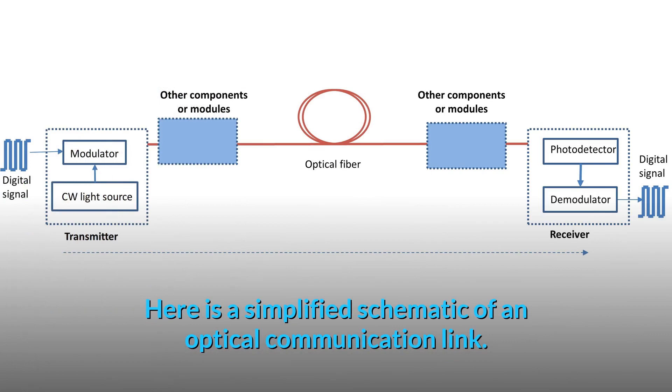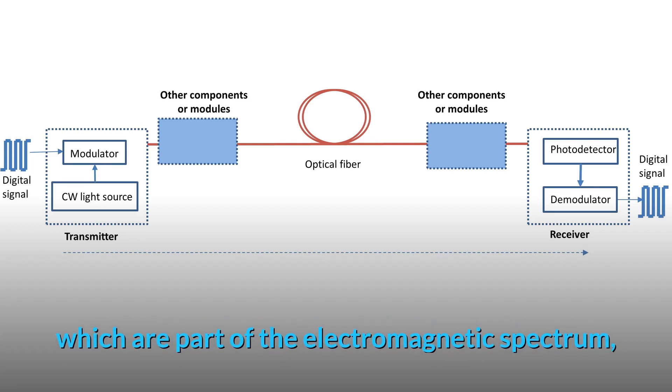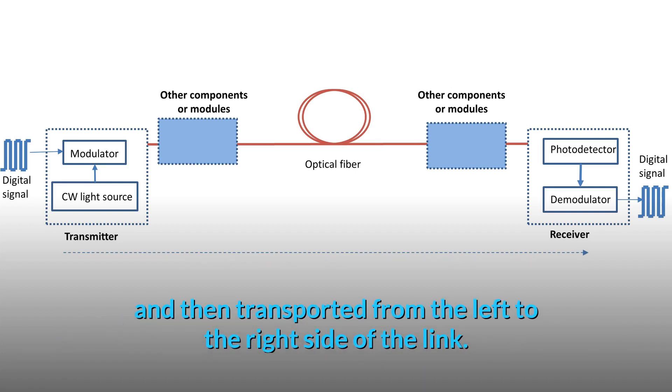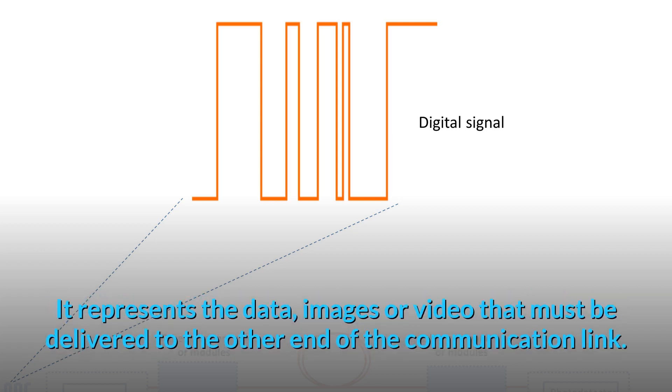Here is a simplified schematic of an optical communication link. Digital signals are encoded on optical waves, which are part of the electromagnetic spectrum, and then transported from the left to the right side of the link. This is a representation of the digital signal that must be transmitted through the link. It represents the data, images, or video that must be delivered to the other end of the communication link.